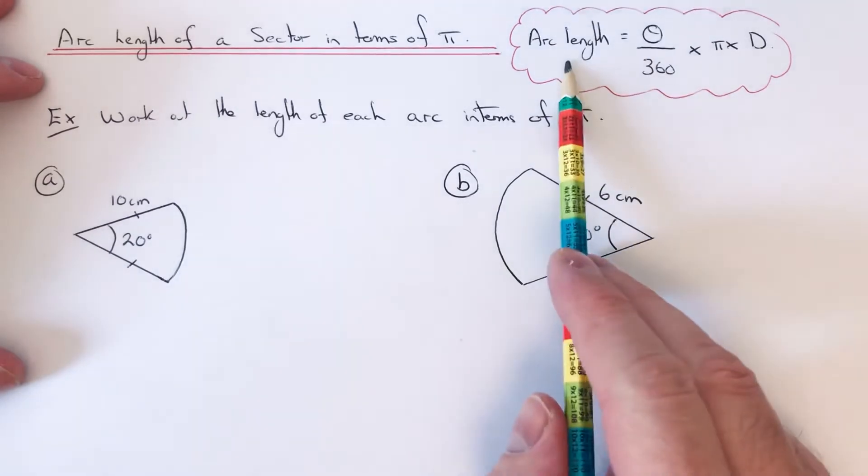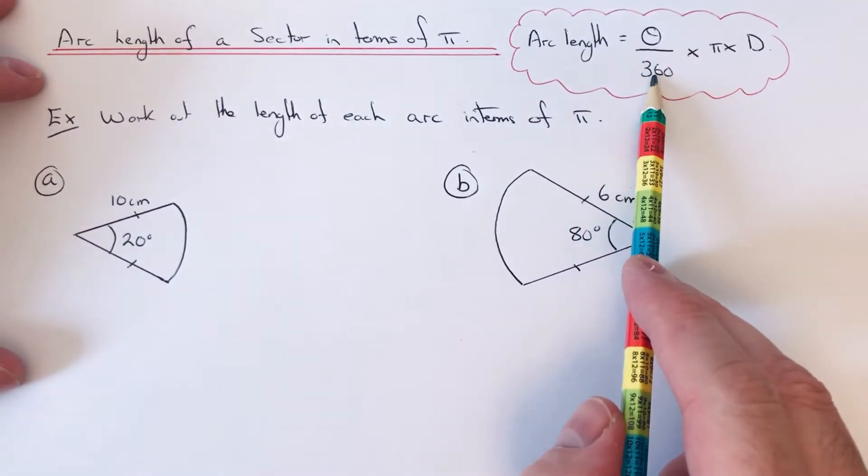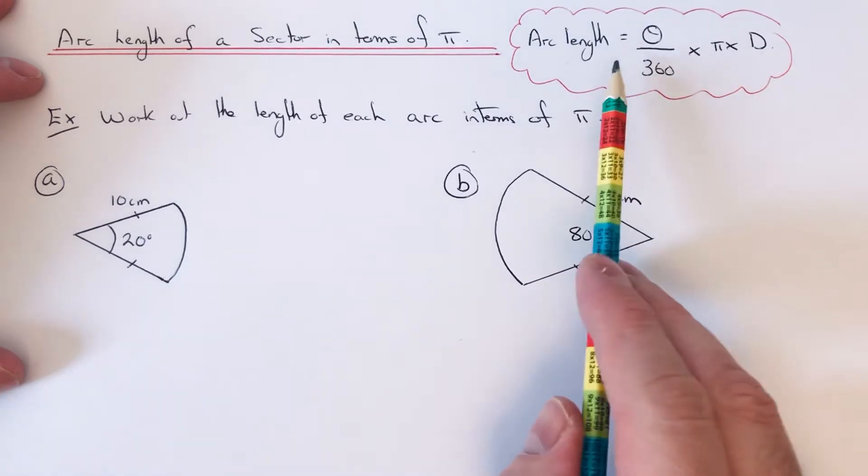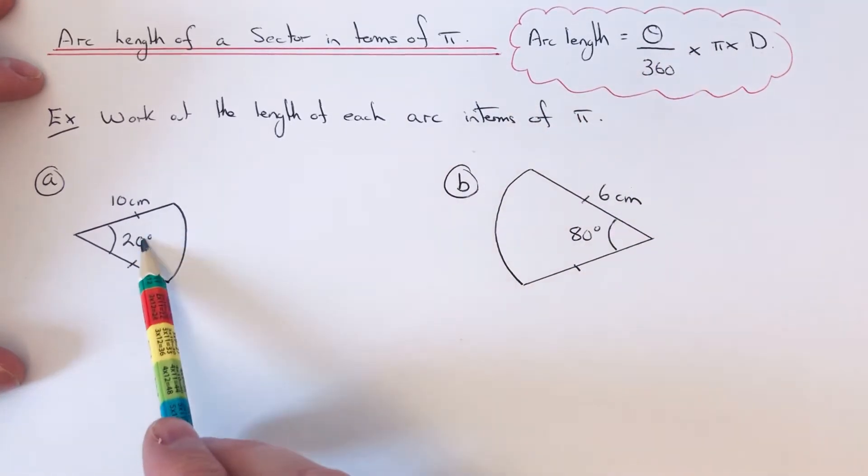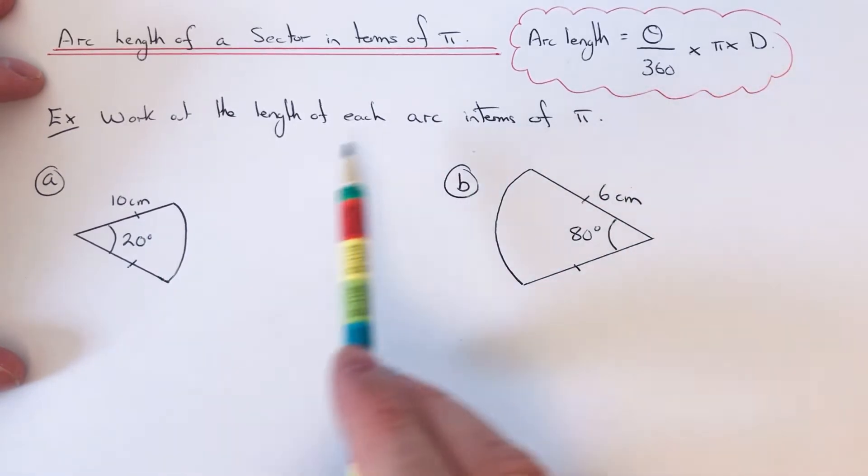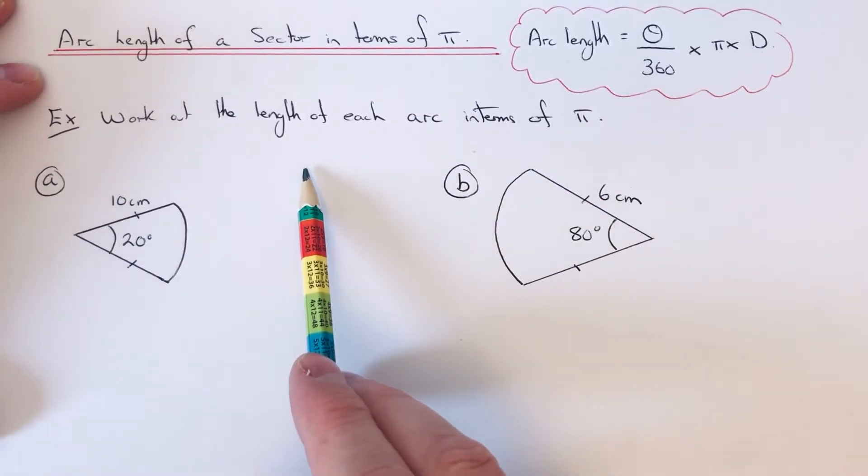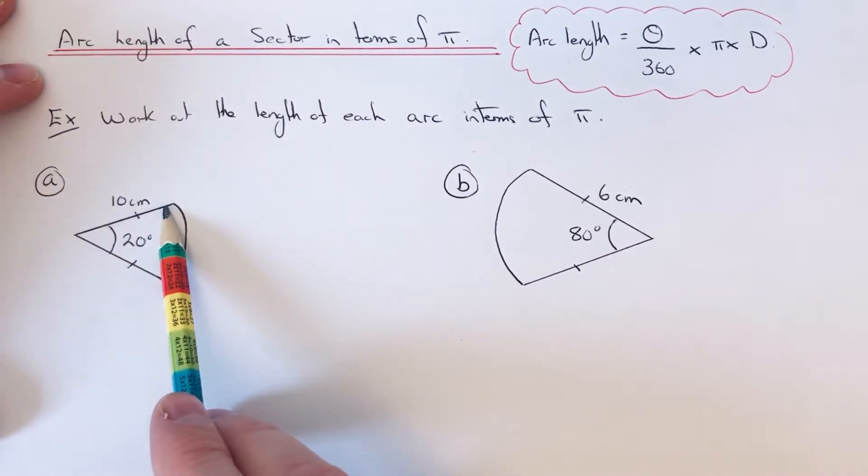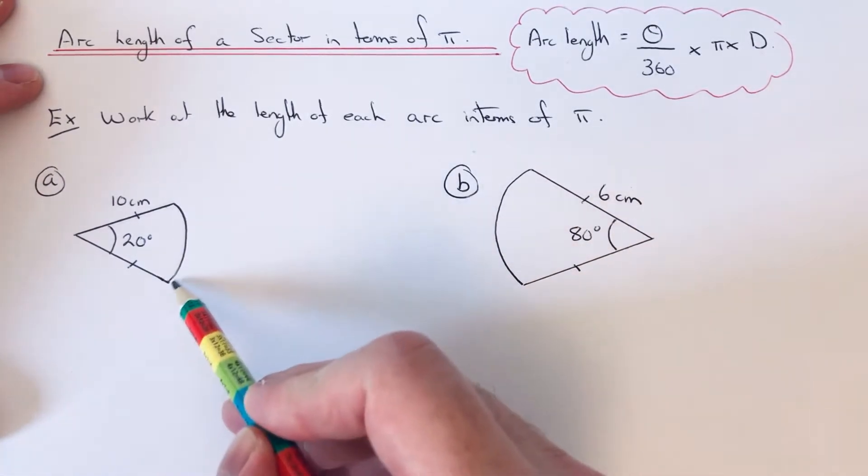To find the arc length, you do θ/360 × π × d. θ is the angle inside the sector, and d is the diameter of the sector. You'd have to double this distance here because that's the radius. The arc length is the length of this curved bit here. That's what we're working out in terms of π.